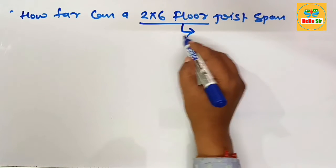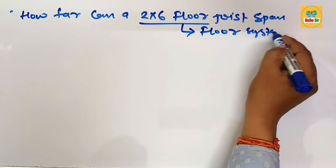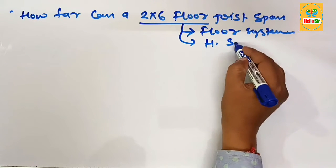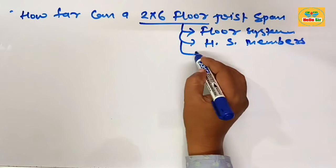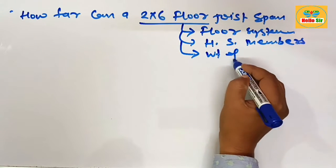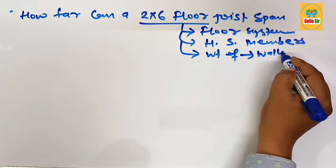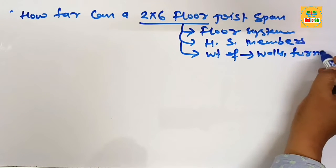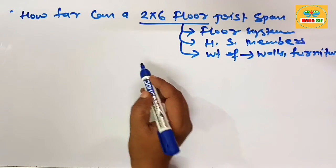You know that a floor joist is a part of the floor system and it is a horizontal structural member that carries the weight of everything inside the room, like the weight of walls, furniture, appliances, and the weight of people.